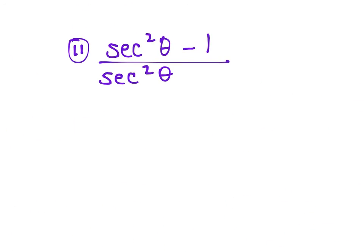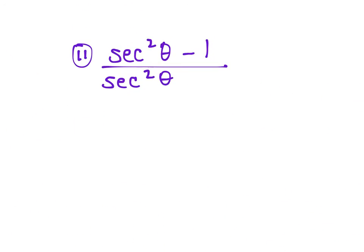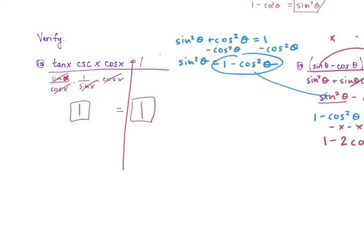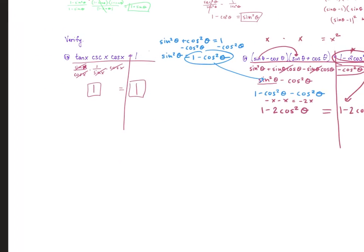Number 11: secant² minus 1 over secant². Remember, when you are multiplying, you can cancel something on top with something on the bottom. If you're adding, they don't cancel.